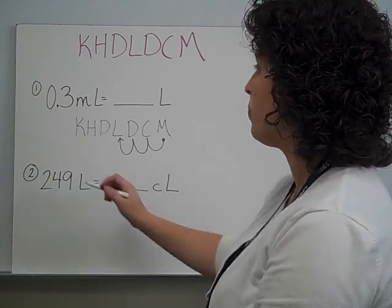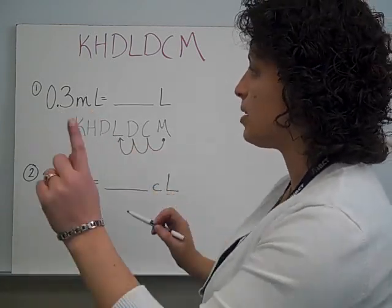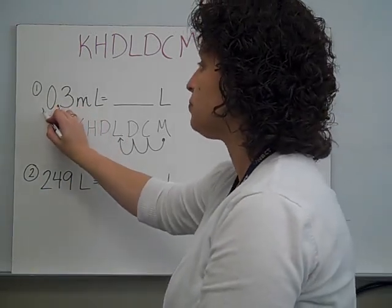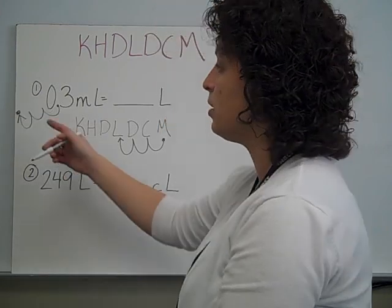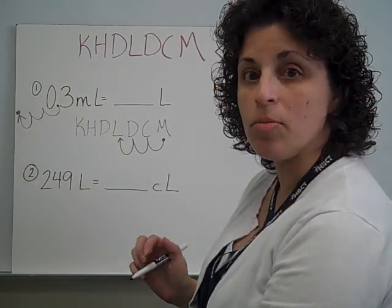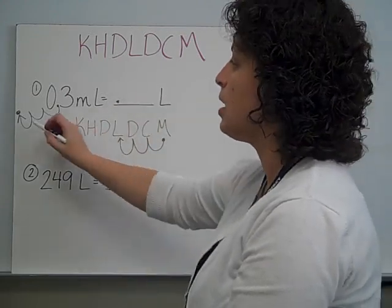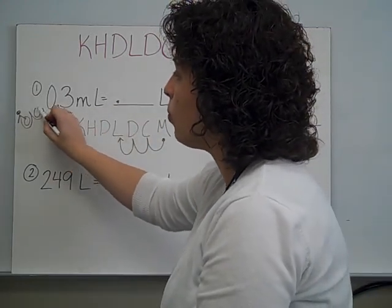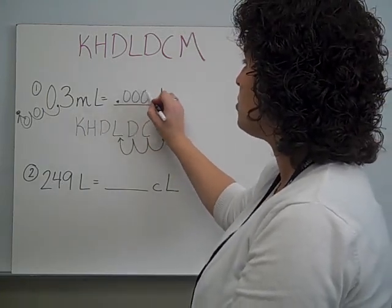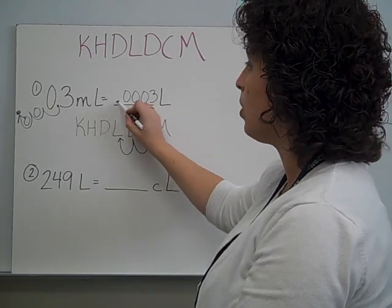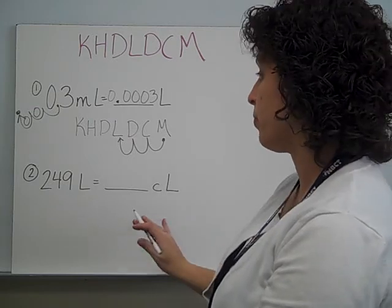Put the arrow on the end to help remember which direction to go — three moves to the left. So I'm coming to the decimal and I need to move it three spaces to the left. One, two, three — new decimal needs to be right here. Now notice these two spaces are empty. We cannot do decimal, blank, blank, zero, three — so these get filled in with zeros. I need decimal, zero, zero, zero, three. But remember, we never start with a decimal, so I do need to put the zero here.